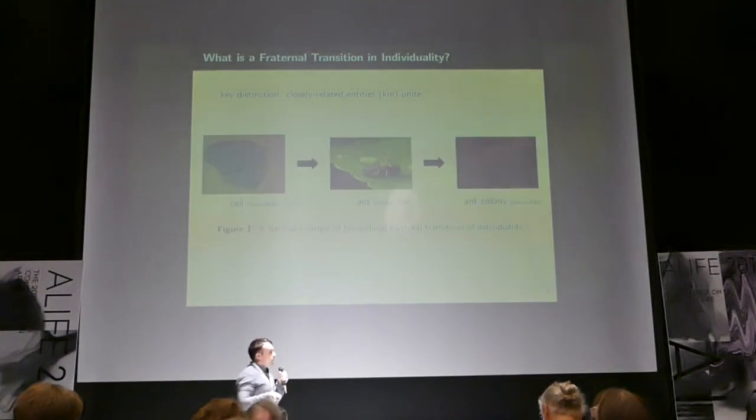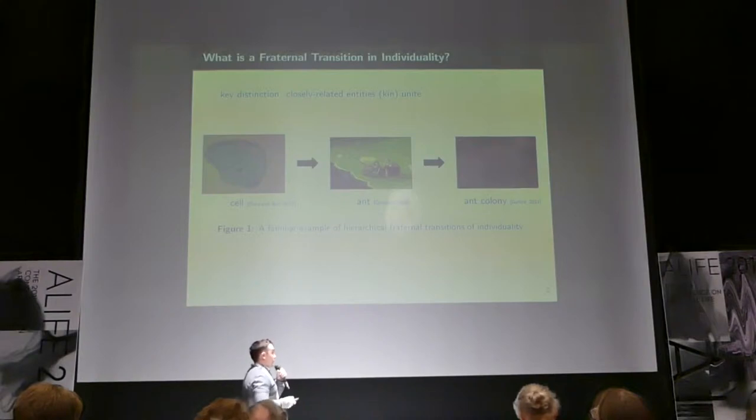The key distinction here is that the entities that unite to form a new individual are closely related, their kin. And so, we're all probably familiar with the example of cells uniting to become multicellular organisms, which can then go on to unite to become a eusocial ant colony. So, this is the type of thing that we're interested in studying.